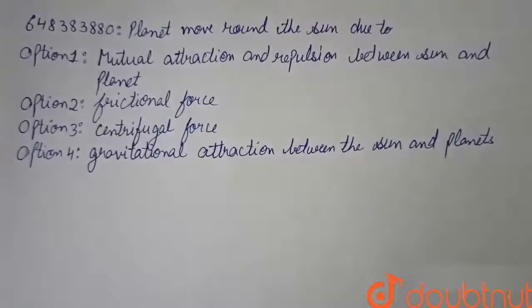So our question is: planets move around the sun due to option 1, mutual attraction and repulsion between sun and planet; option 2, frictional force; option 3, centrifugal force; option 4, gravitational attraction between the sun and planets.